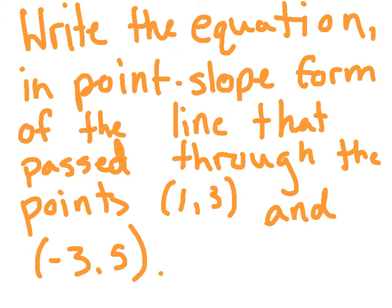When you want to write the equation in point-slope form of the line that passes through the points (1, 3) and (−3, 5), first you must find the slope.